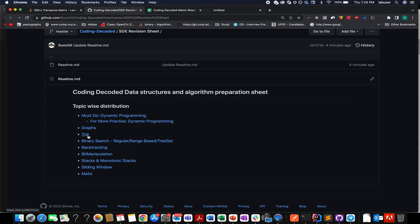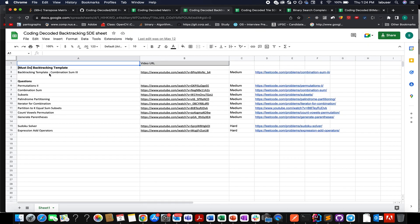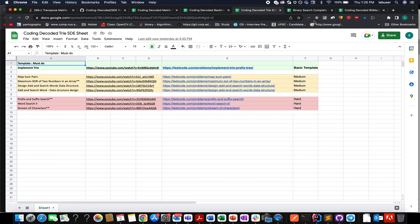Along with this, in few of the revision sheets like backtracking, tries, binary search, I have provided you with the template that gets applied to all such questions. For example, let's walk through the backtracking one. This is the backtracking template. If you go through this question, the rest of the questions apply the same formula. Similarly for tries and others as well. I'm attaching its link in the description below. Do check them out and it's definitely gonna help you in your interview preparation.